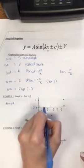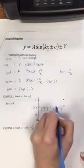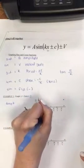I cross at pi halves and 3 pi halves and I can draw in my smooth curve.